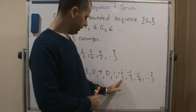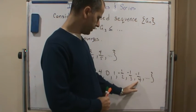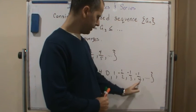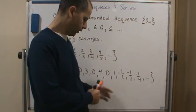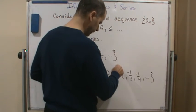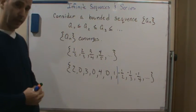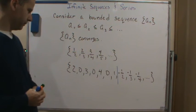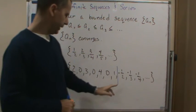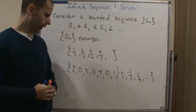But if you notice after here, now the sequence starts to increase. Now it's an increasing sequence from this point forward. So we see that eventually the sequence becomes an increasing sequence. So on the eighth term here, it becomes an increasing sequence.